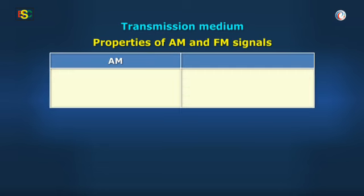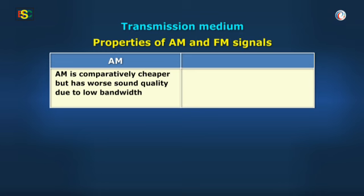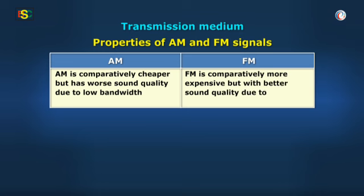AM is comparatively cheaper but has worse sound quality due to low bandwidth. FM is comparatively more expensive but with better sound quality due to higher bandwidth.